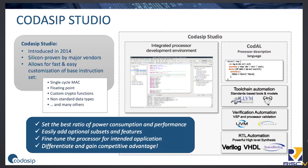Let's begin with a short introduction of our processor development environment, which is called CodaSIP Studio. The main input of CodaSIP Studio is a high-level description of the processor in an architecture description language called Coda. From this high-level description it is possible to automatically generate software tools — for example, compiler, linker, assembler, profiler, simulator — and also an RTL representation of the processor in Verilog, VHDL, or SystemVerilog, and also a verification environment according to the UVM verification methodology.